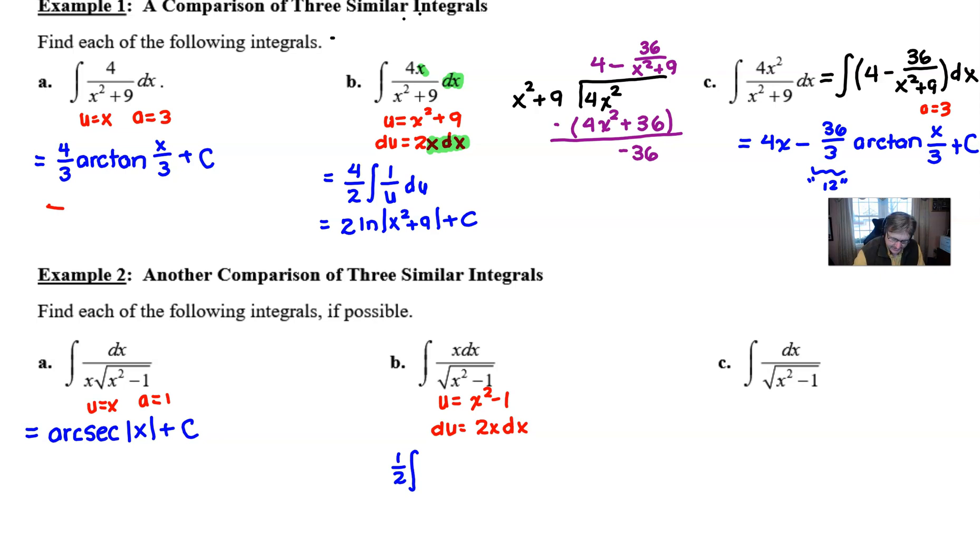So what we have the luxury of doing is saying that this X DX is really going to be able to be replaced with my DU as long as I do something about that 2. And if I just simply divide it over, I'm in good shape. So basically we're just integrating 1 over the square root of U DU, which is another way to say integrate U to the negative half power with respect to U.